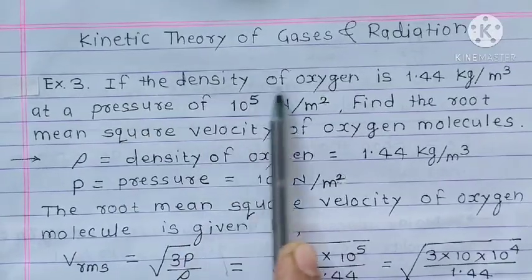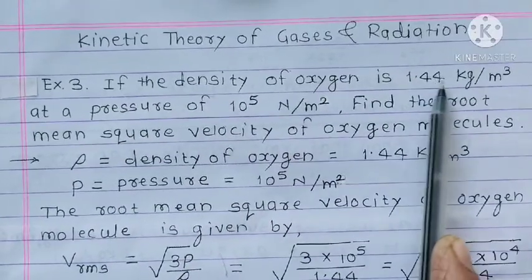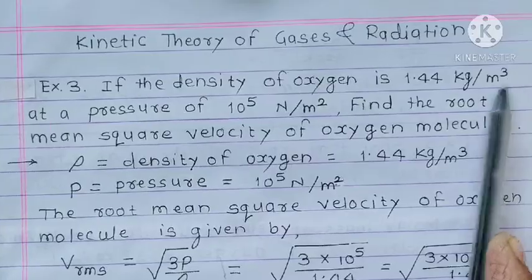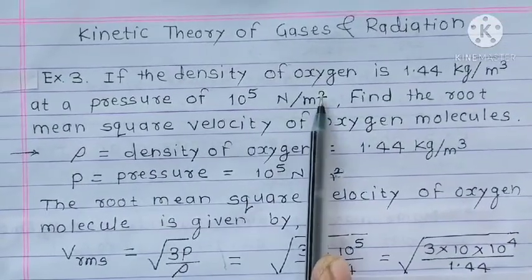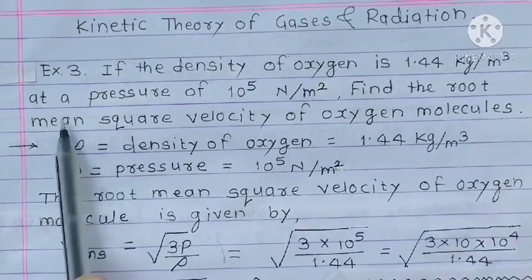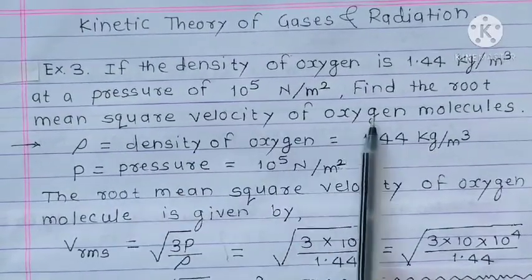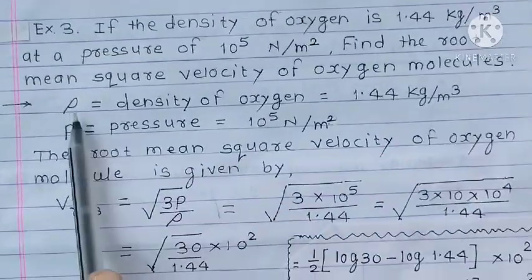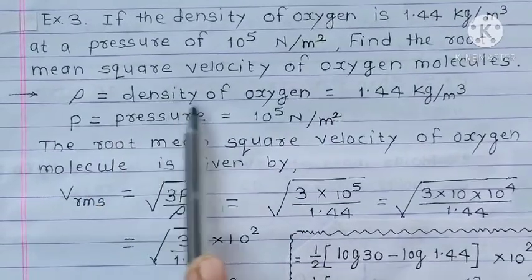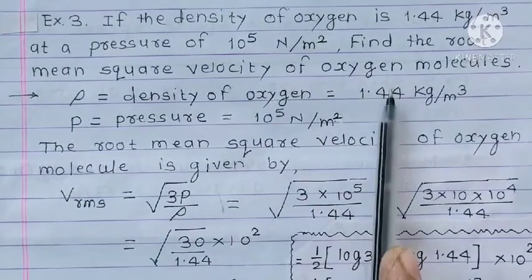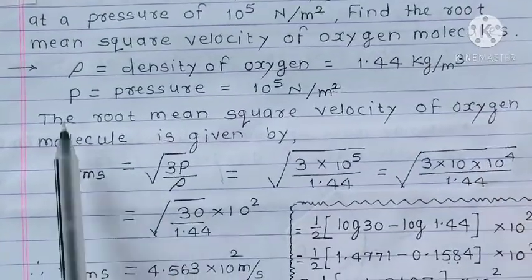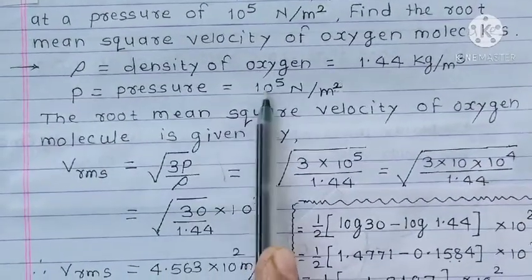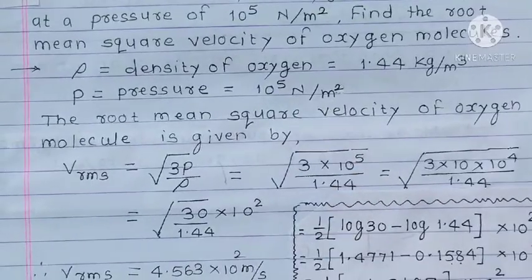If the density of oxygen is 1.44 kg per meter cube at a pressure of 10 raise to 5 Newton per meter square, find the root mean square velocity of oxygen molecules. Rho, that means density of oxygen, is 1.44 kg per meter cube. P, that is pressure, is 10 raise to 5 Newton per meter square.